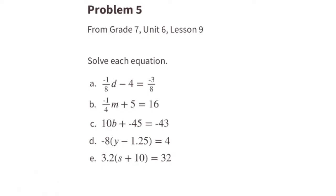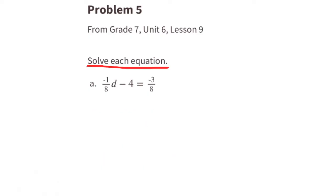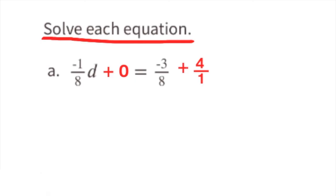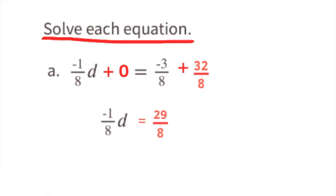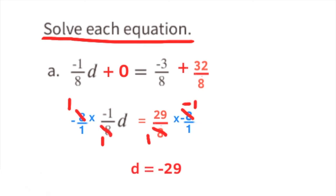Problem number five from 7th grade unit 6 lesson 9: solve each equation. Part a: add 4 to both sides, canceling the negative 4 on the left. On the right side we get 32 over 8, which equals 4. Then multiply both sides by the reciprocal of negative one-eighth, which is negative 8. That cancels the left side, leaving d, and the right side gives negative negative 29, so d equals negative 29.